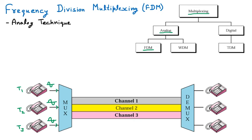Now there is a single line — this is the complete link — and through this link we are sending the three data together. So these three frequencies are coming together. This complete link is hypothetically divided into three different channels, because there are three devices. So this is channel 1, channel 2, and channel 3. Inside these three channels, the three frequencies of telephone 1, 2, and 3 are moving. They reach the demultiplexer, which bifurcates them back to the different telephones.